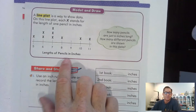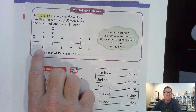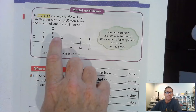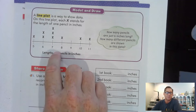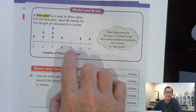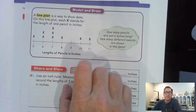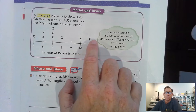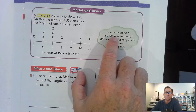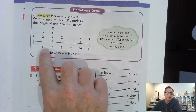Looking at the lengths of pencils in inches: there's one pencil that is five inches long, two pencils that are six inches long, three pencils that are seven inches long, one pencil that is eight inches, no pencils that are nine inches, one pencil that is ten inches, and one pencil that is eleven inches.